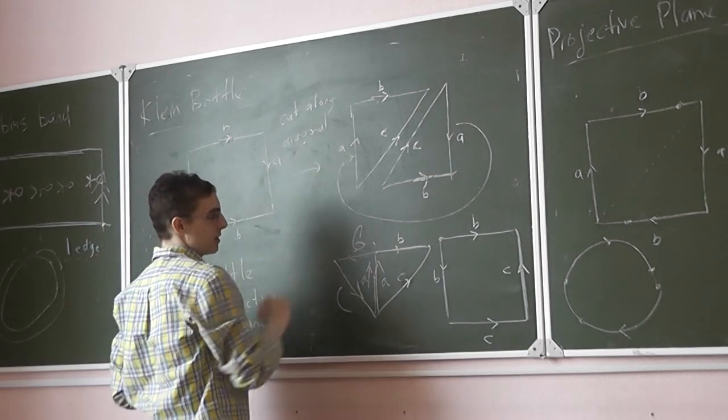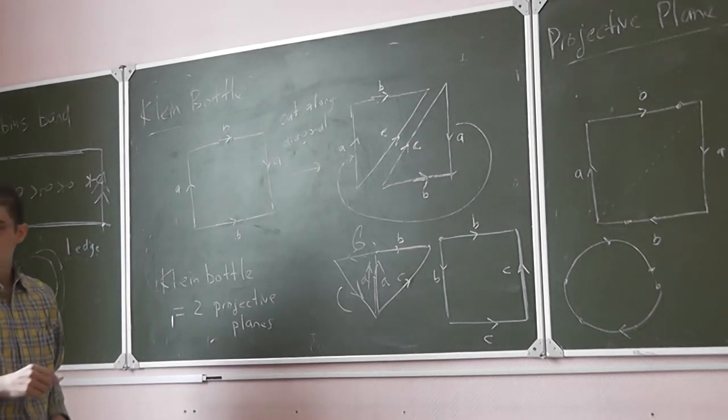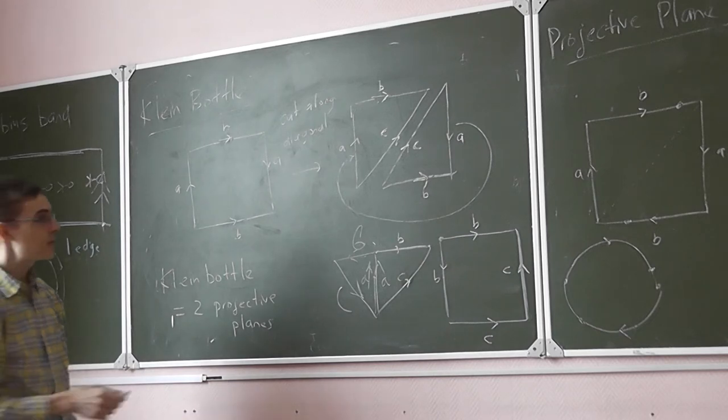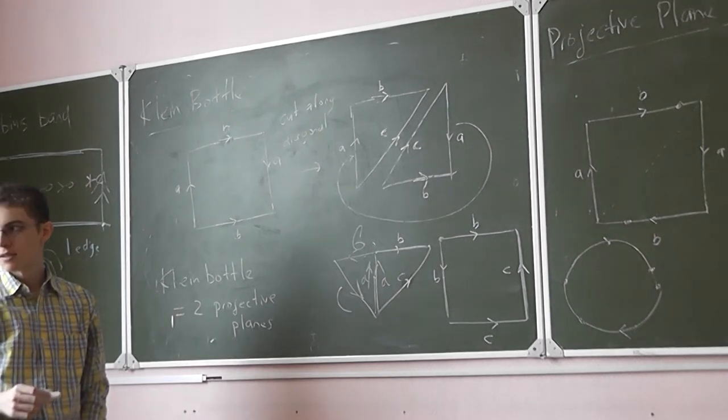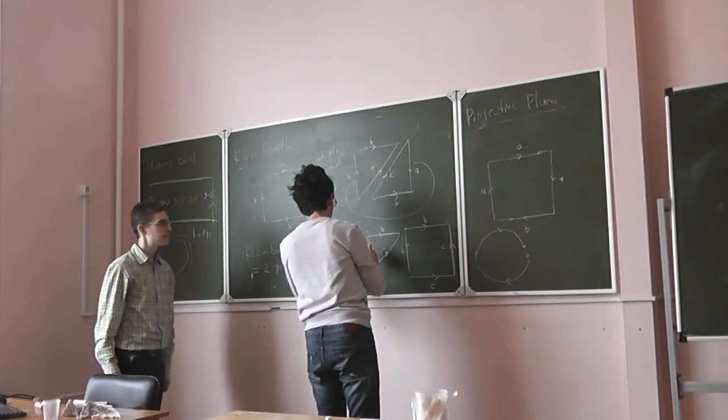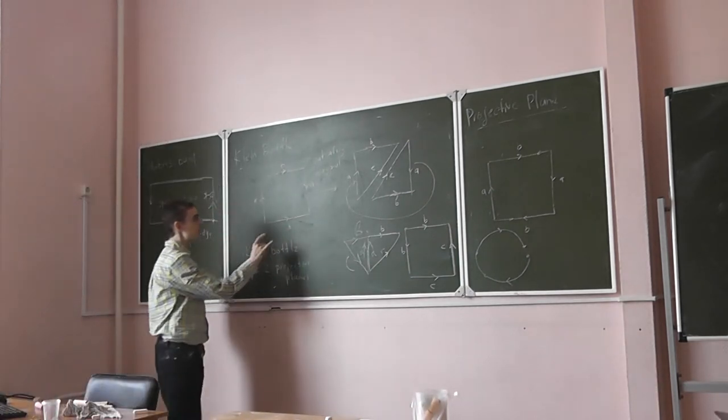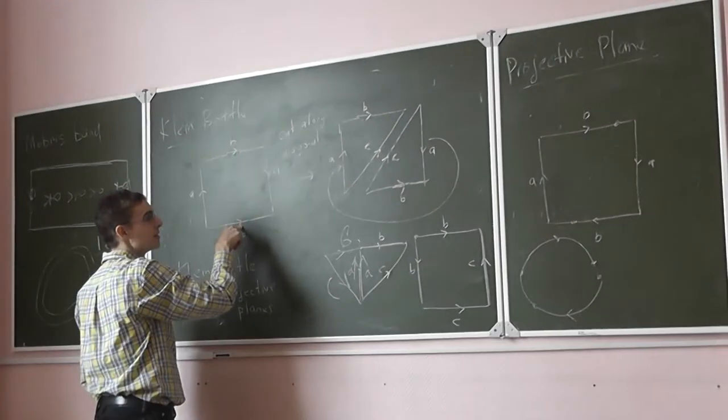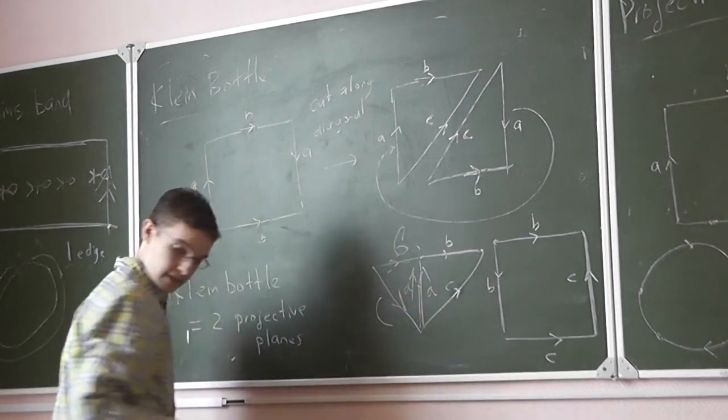These two triangles, make sure they're labeled like this. And now bring them together. What just happened is what, as I originally drew the Klein bottle incorrectly, I had these two arrows going wrong. And so I need to switch this one. So that switched there.